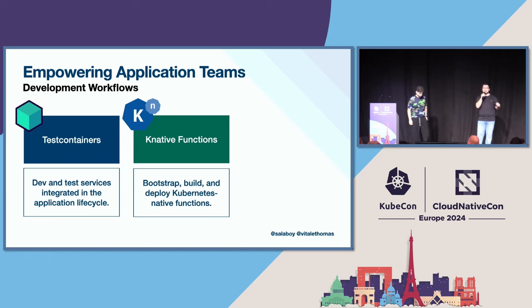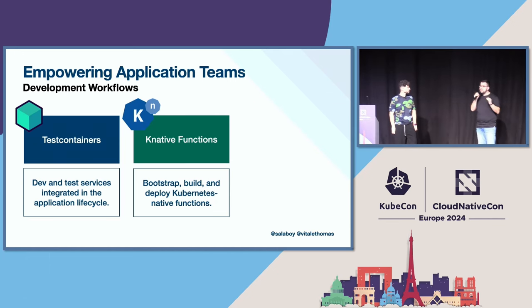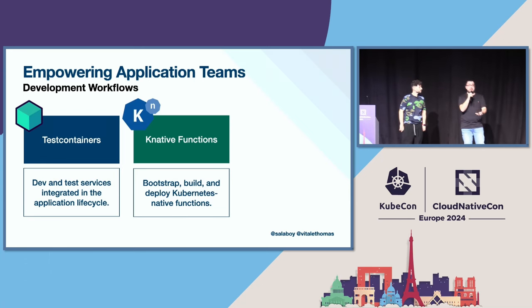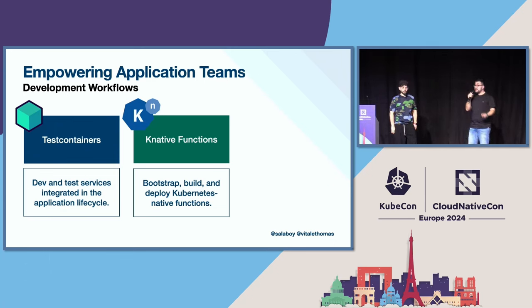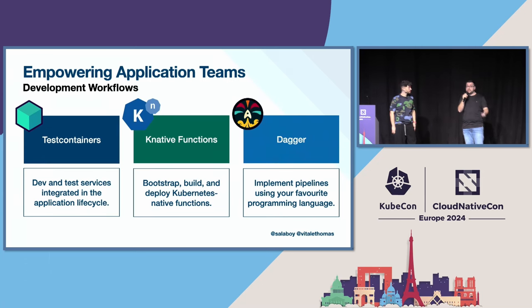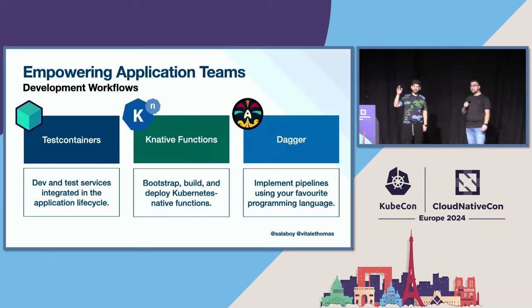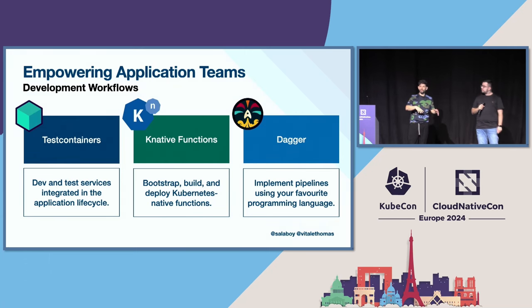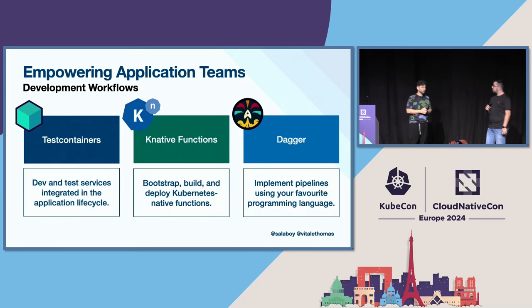Another tool that can help if you're working specifically with functions is Knative Functions. It combines different tools to provide an end-to-end experience — it has a bootstrapping capability, so instead of using Backstage, you can use Knative Functions pointing to a template and get a new project bootstrapped. Under the hood it also uses Cloud Native Buildpacks to containerize applications, and for deployment it uses Knative Serving. So you get one entry point for the entire lifecycle of the application. And there's also Dagger, which lets you implement pipelines using normal programming languages — pipelines that you can run on your laptop and in CI.